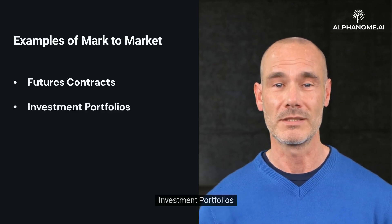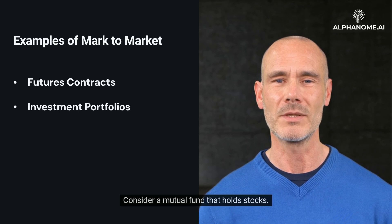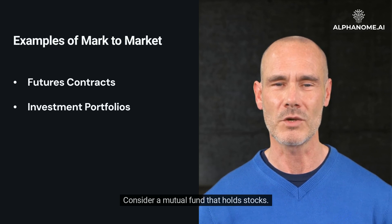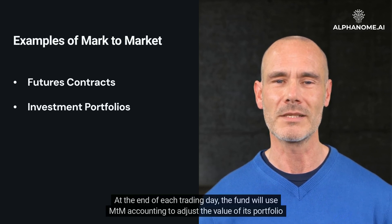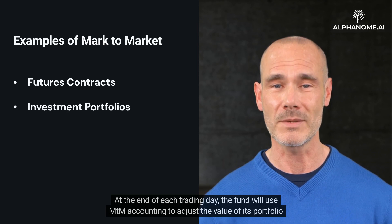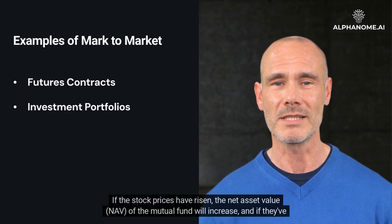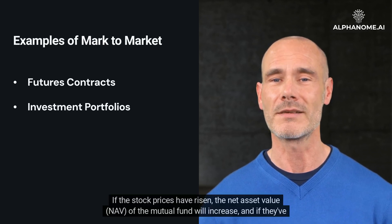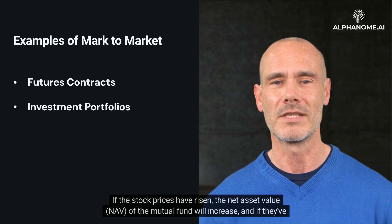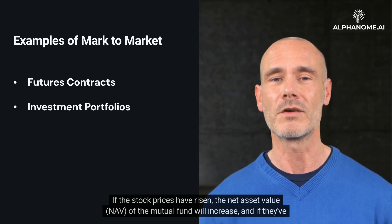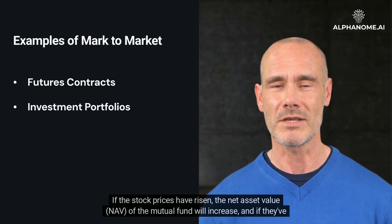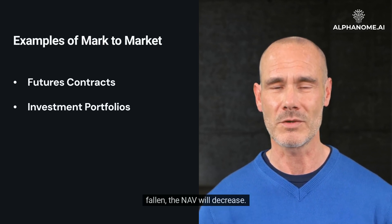Investment portfolios: consider a mutual fund that holds stocks. At the end of each trading day, the fund will use MTM accounting to adjust the value of its portfolio based on the closing prices of the stocks it holds. If the stock prices have risen, the net asset value, NAV, of the mutual fund will increase, and if they've fallen, the NAV will decrease.